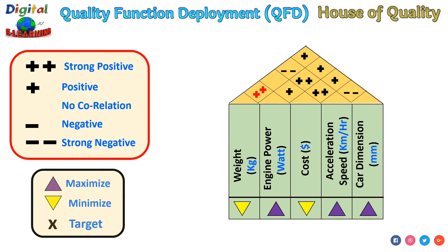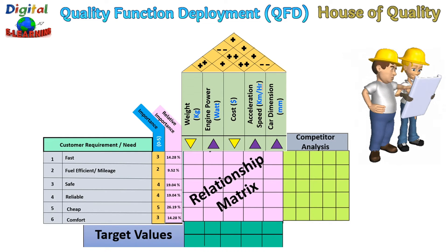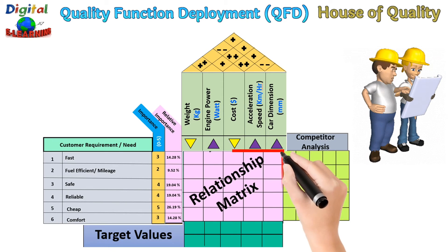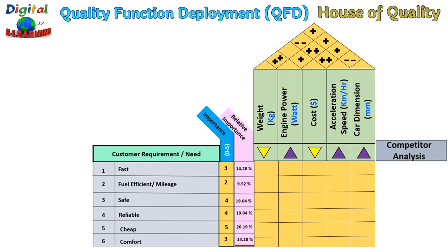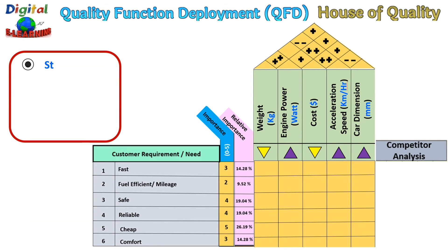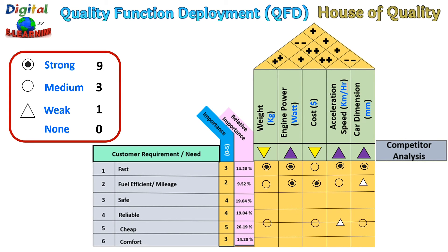Now we need to fill in how each design parameter affects each customer requirement through the relationship matrix. The legends are: a filled circle means strong relationship with numerical value 9, a circle means medium with value 3, a triangle means weak with value 1, and blank means none with value 0. We define for each customer requirement — fast, fuel efficient, safe, reliable, cheap, comfort — against each of the design parameters, what the relationship is. We then need to define the relative importance of each design parameter.